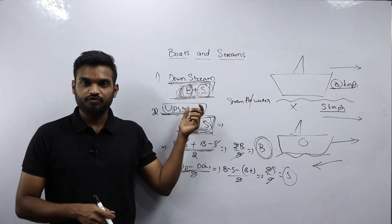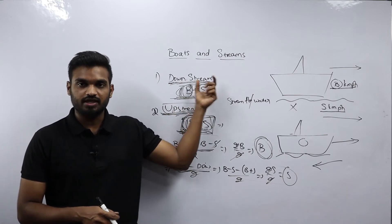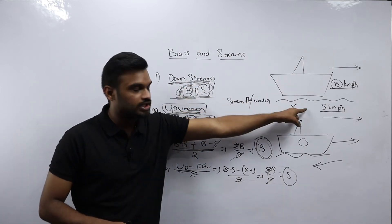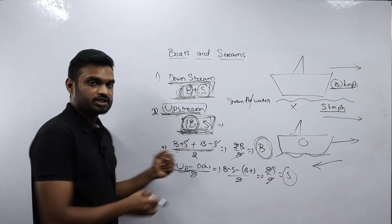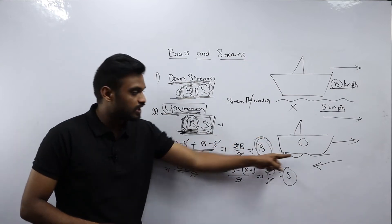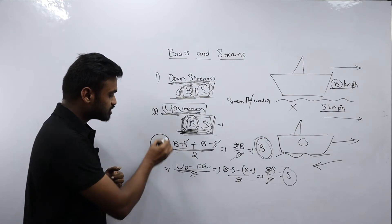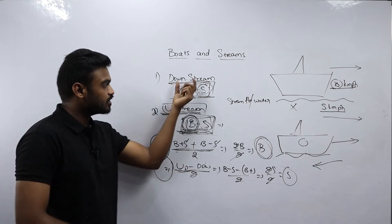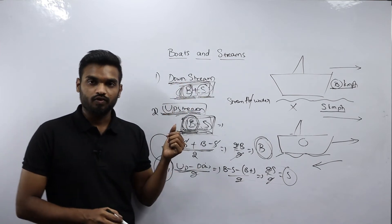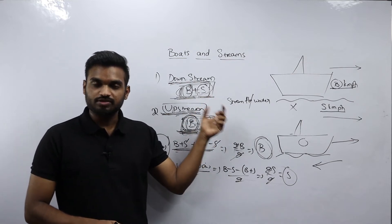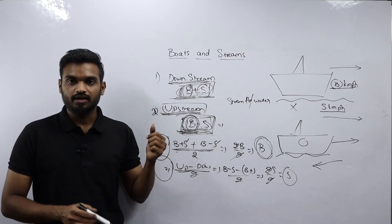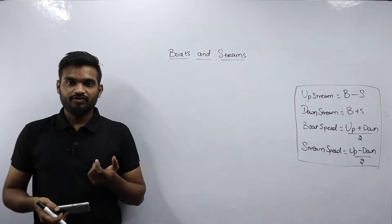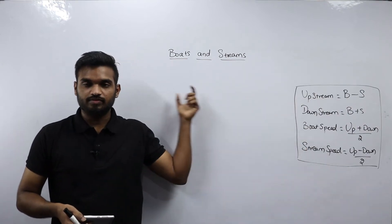This is the actual concept behind boats and streams. If you understand this concept, you can simply solve any kind of questions. The only things you need to remember: downstream is adding both boat speed and water speed; upstream is subtracting water speed from boat speed. To find boat speed, add downstream and upstream and divide by 2. To find stream speed, subtract downstream from upstream and divide by 2. Now let's solve some basic level problems.